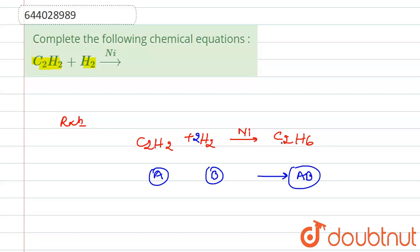Here what we can say that acetylene plus dihydrogen, in presence of nickel, they form ethane.